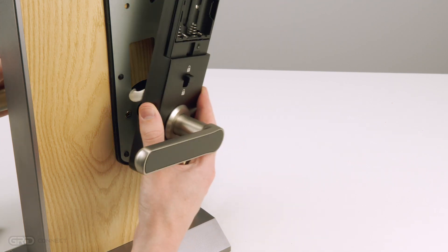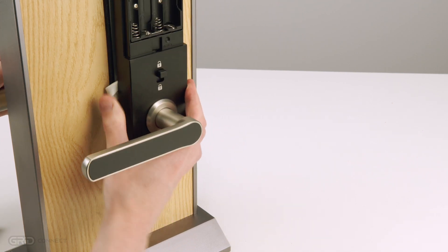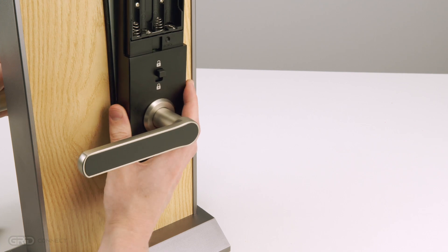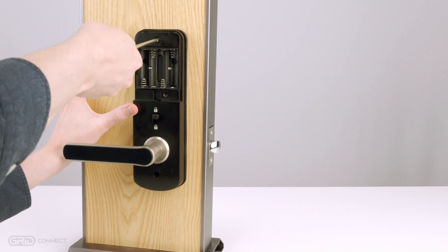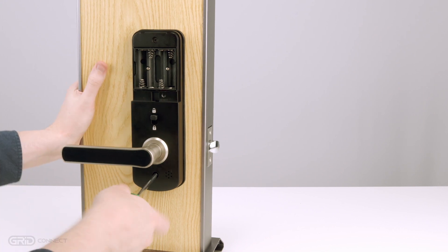Fit the back panel against the mounting plate, feeding the excess cable inside the door. Secure the back panel using the two provided A4 or B4 screws.